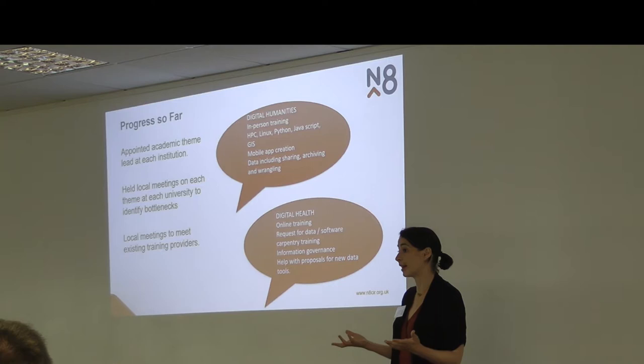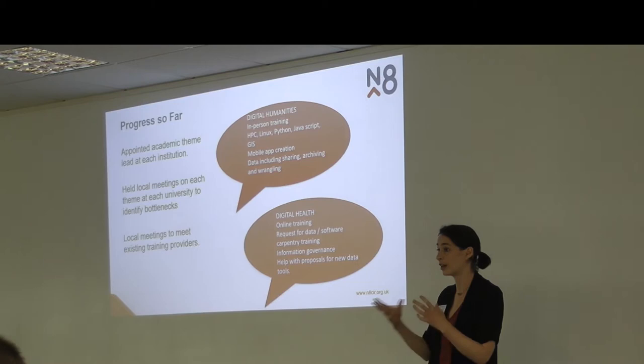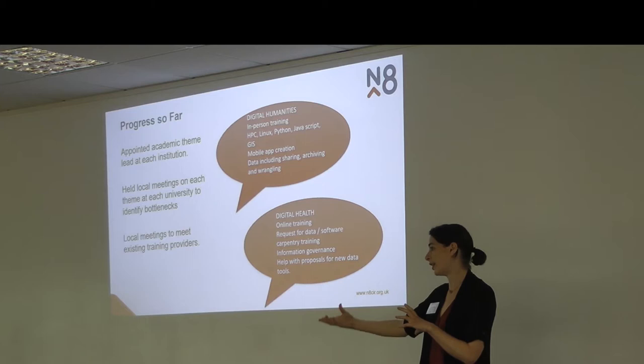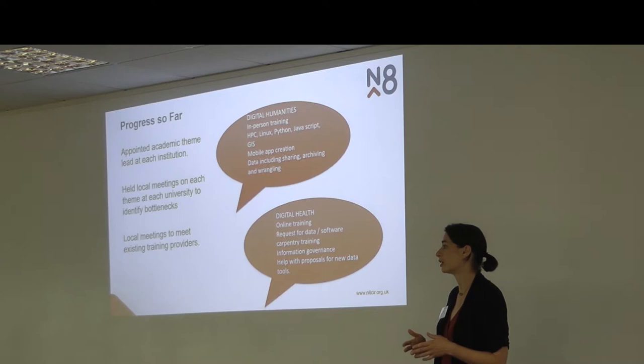In total, that's 16 academics — eight health academics and eight humanities academics across the universities. They are responsible for going to their academic communities and acting as a bridge between the research software engineers and the academics. We then held local meetings where we invited interested academics and asked them what were the bottlenecks in their research process and what we could do to help.